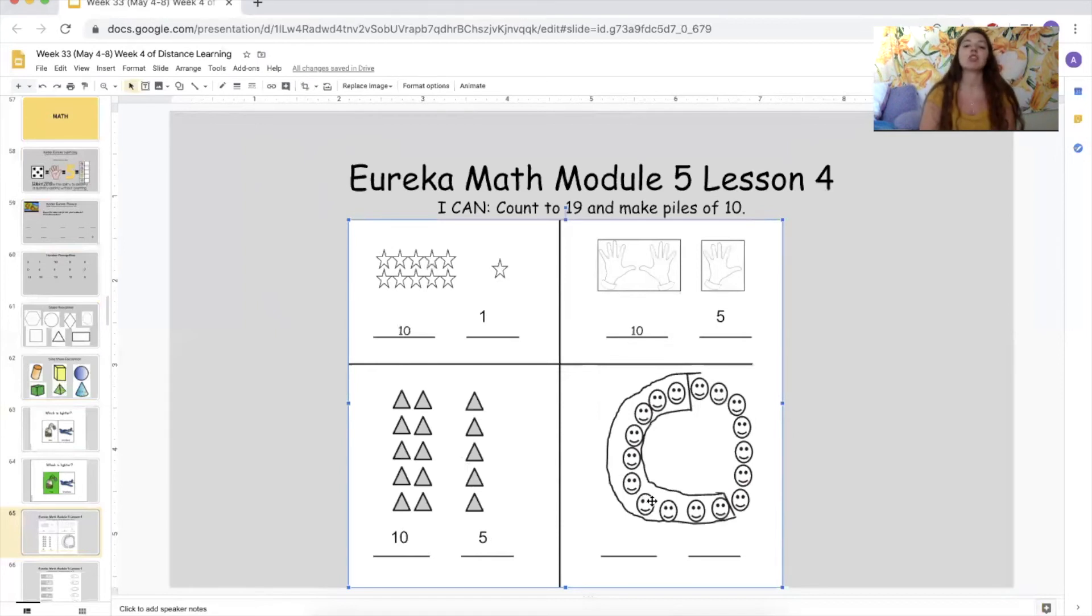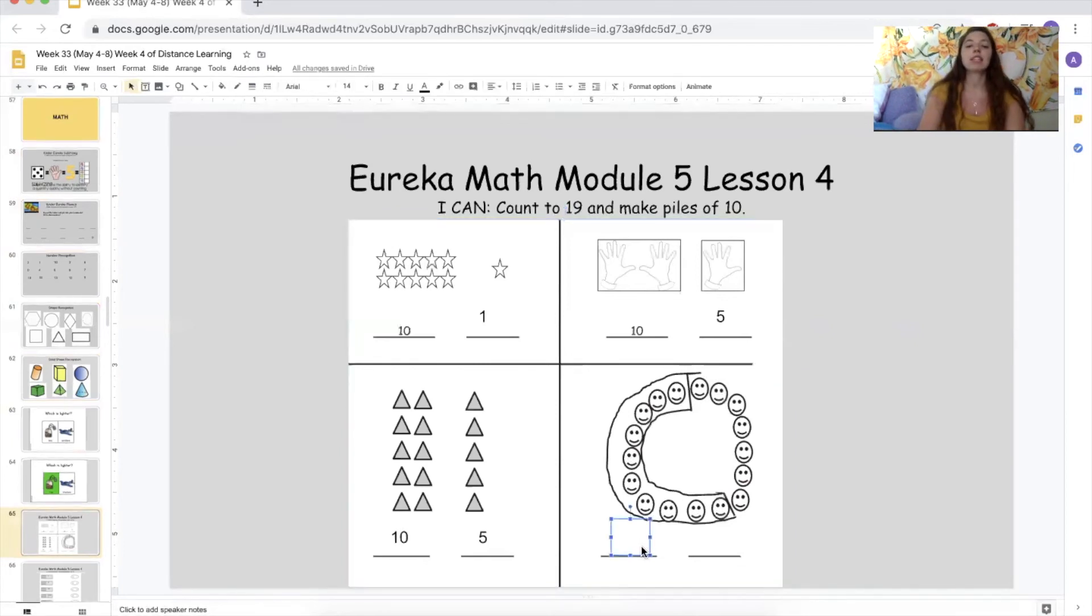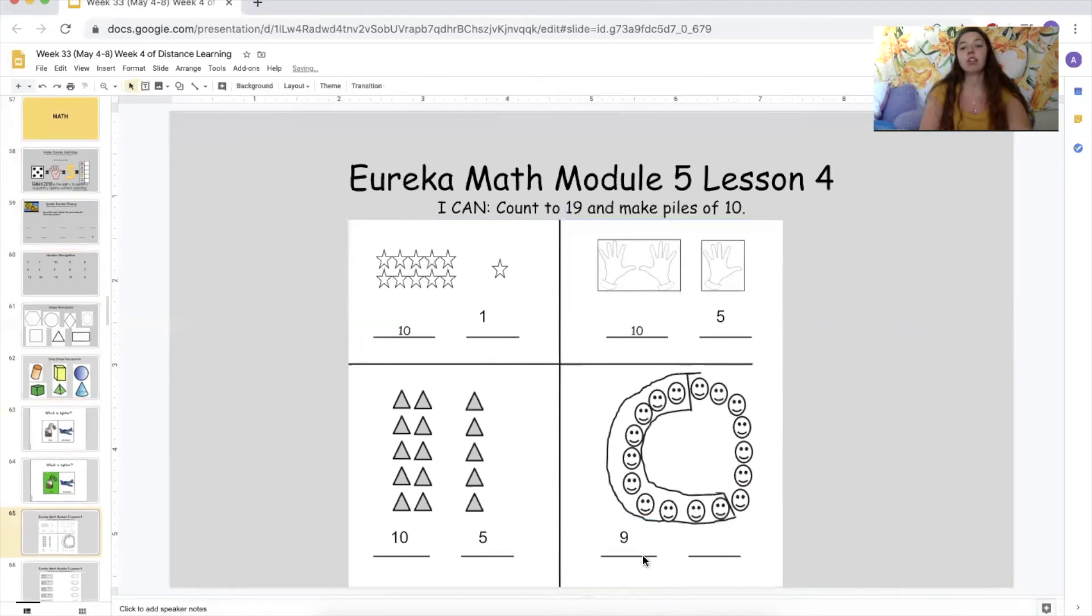Let's count how many they circled here of the Smiley's. One, two, three, four, five, six, seven, eight, nine, 10. So how many goes in our first group? 10. Very, very good.